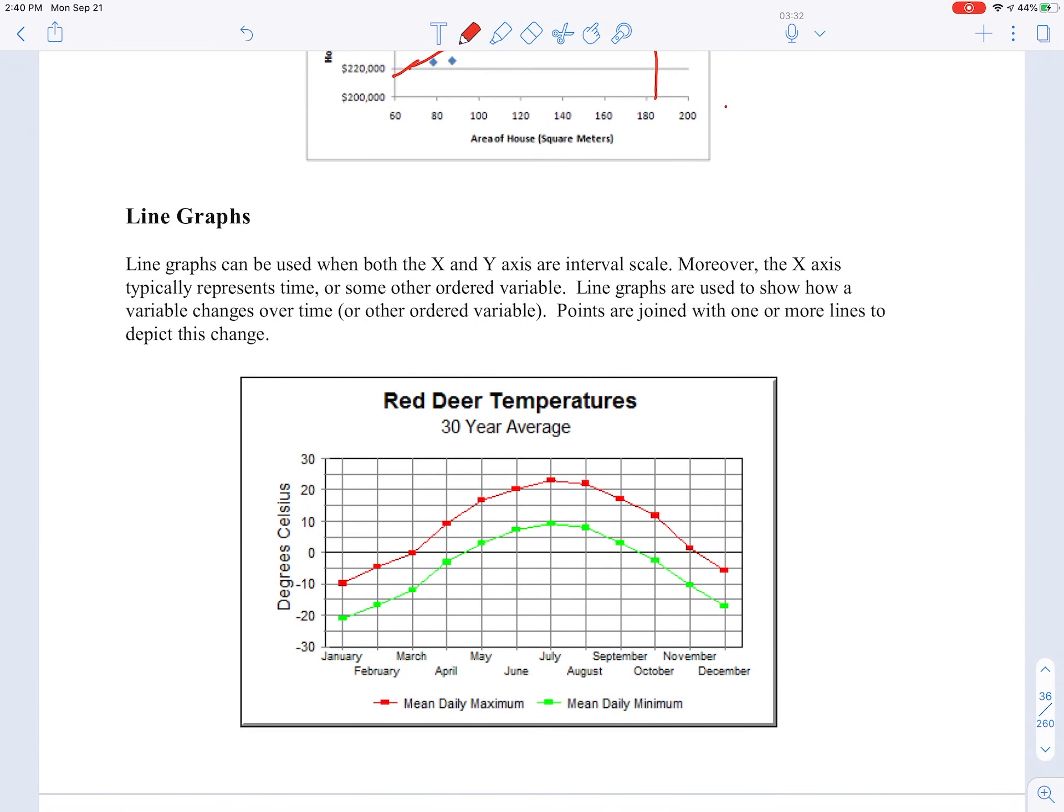Last one here is a line graph can be used when both the x and y are interval in scale. And the x-axis represents usually something like time or some ordered variable. And so the line graph then shows how the variable changes over time. So this works well when you're talking about temperatures. You can see that this is something down here, which is ordered January up to December. Not exactly interval in terms of the number of days, but certainly close enough. But it's certainly an ordered variable. And then the degree Celsius, of course, is an interval scale here.